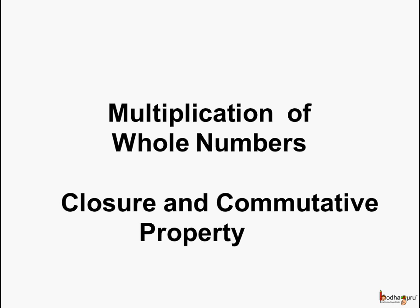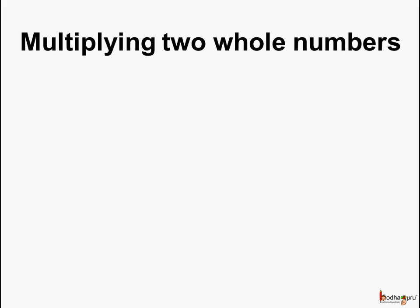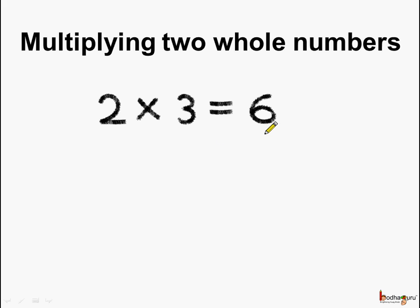First we will start with closure property and commutative property of multiplication. Let us multiply 2 whole numbers. 2 multiplied by 3 is equal to 6. Here 2 and 3 are whole numbers and the product is 6, which is also a whole number.